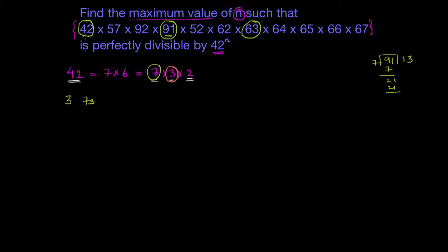Now let us count the number of 3s in this given expression. Here, the sum of digits is divisible by 3, so I'll get a 3 from here. This will again be divisible by 3. This will again be divisible by 3. This won't be, because the sum of digits is not divisible by 3. This won't give me one either. This will give me one more 3. This will give me no 3s. This will again give me a 3, and this won't. So I'll have 4 threes.